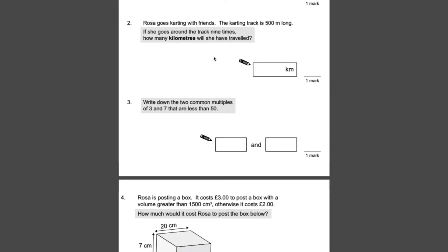Number two, Rosa goes karting with friends. The karting track is 500 metres long. If she goes around the track nine times, how many kilometres will she have travelled? Now that's the important bit. At the moment we've got it in metres, but they want the answer in kilometres. So that's where most people will fall down. So first of all, if she goes around the track once it's 500 metres. If she goes around nine times, it needs to be nine times as much. So nine times 500 is 4,500 metres, but the answer wants kilometres. Obviously there are 1,000 metres in a kilometre. So our answer would be 4,500 divided by 1,000, which is 4.5 kilometres.